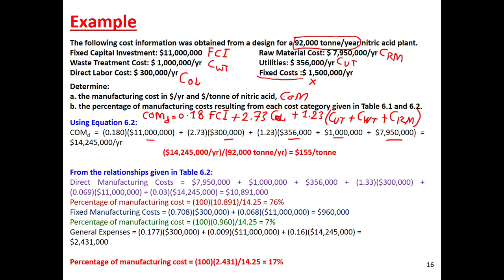The question asks for cost per year — which we already found as approximately 14 million dollars per year — but also per dollar per ton of nitric acid. You divide the annual cost by the production rate (92,000 tons/year), giving approximately 155 dollars per ton of nitric acid.